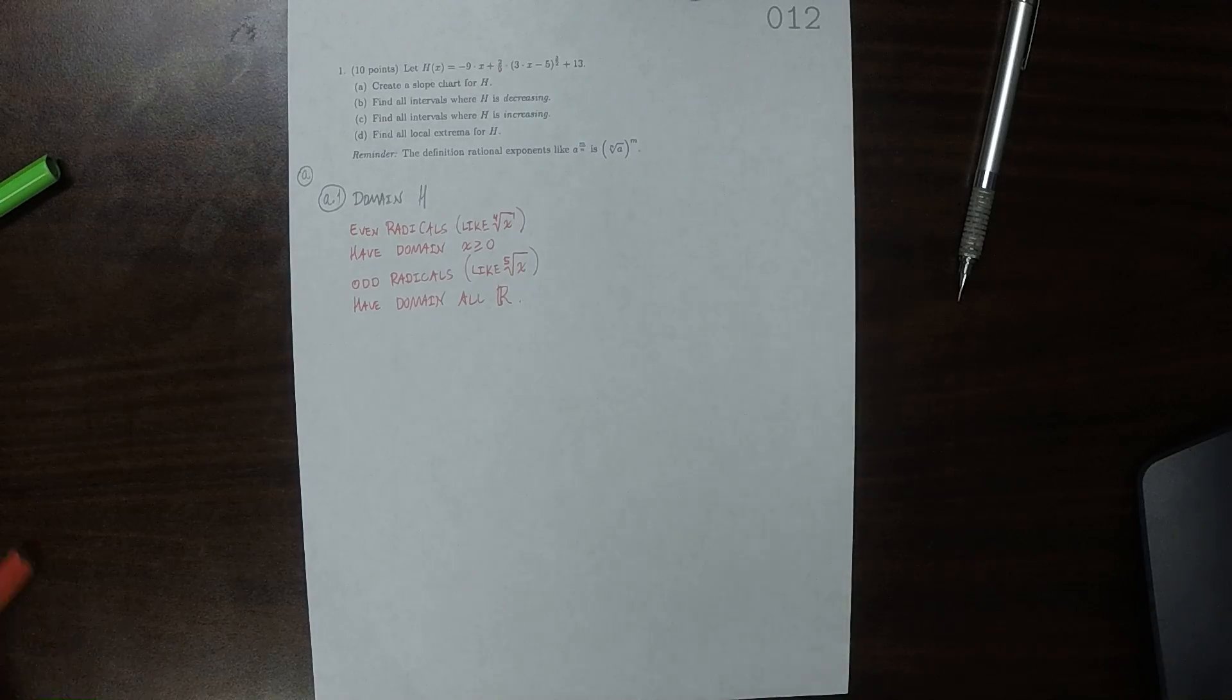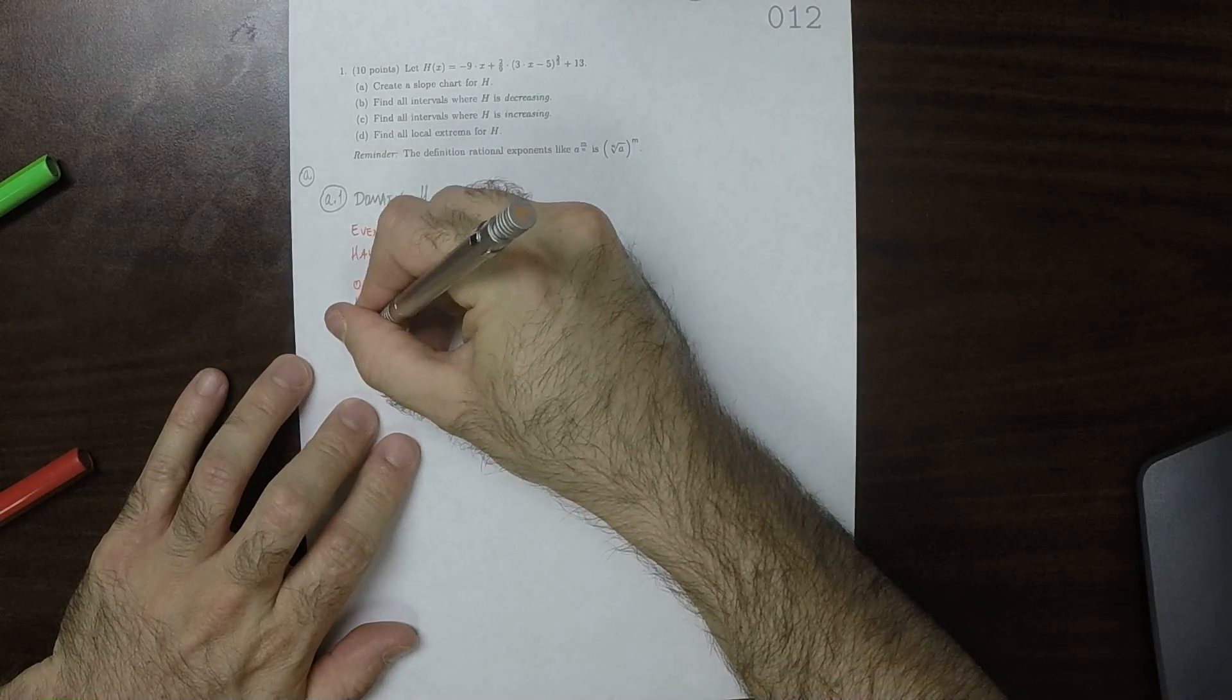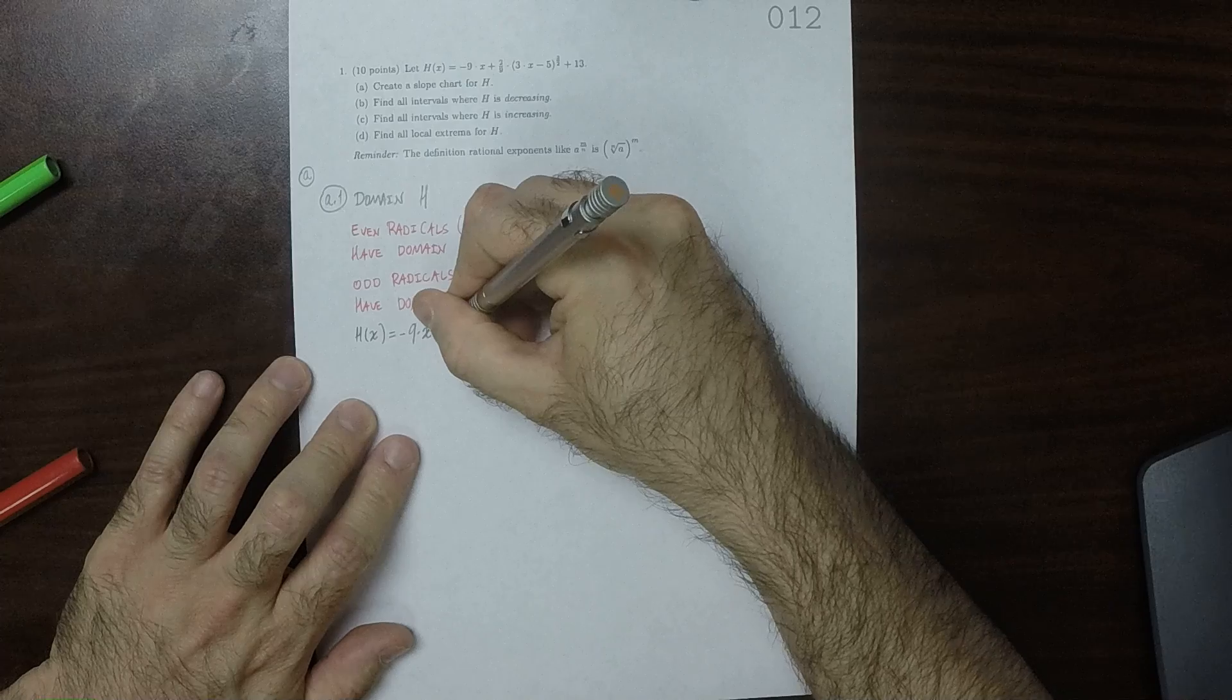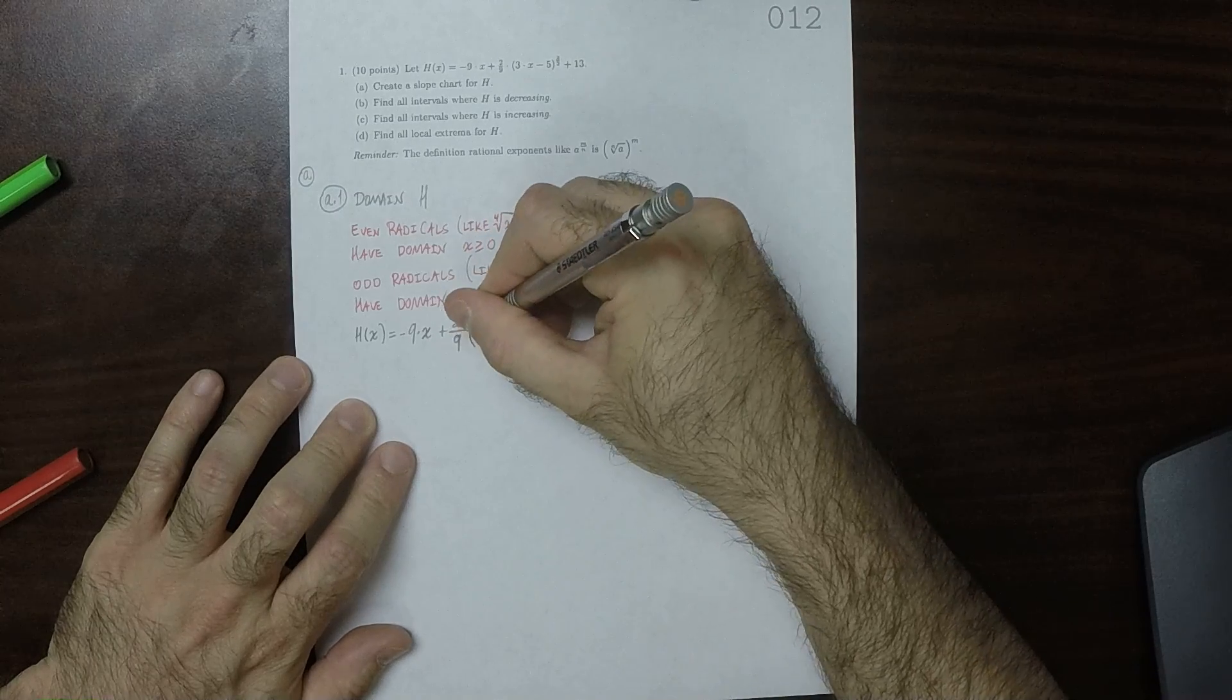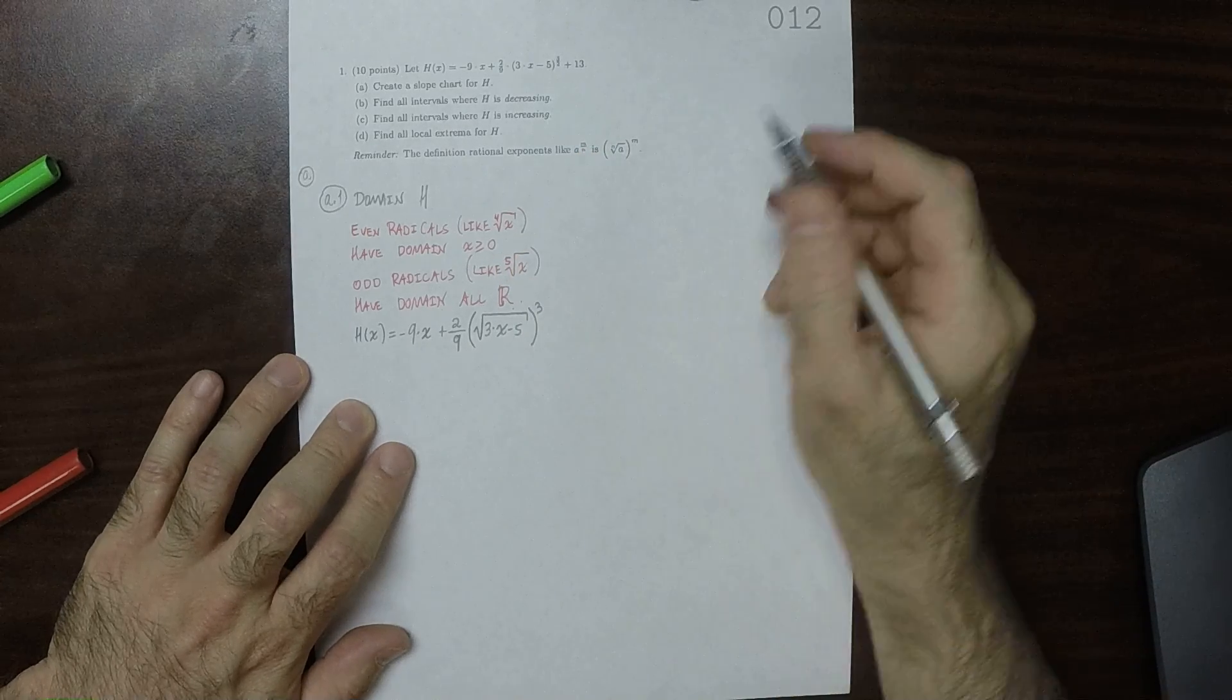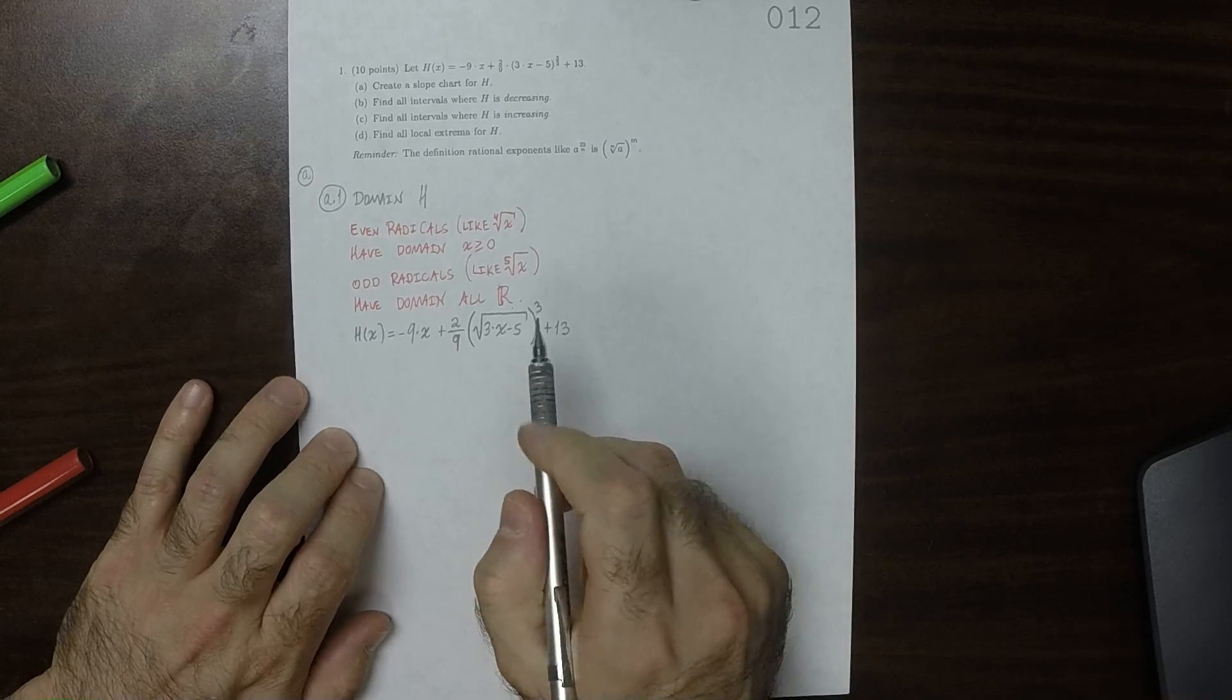Okay, so then the reminder is that this fractional exponent actually means an expression involving radicals. So H of X is equal to negative 9 multiplied by X and then plus 2/9. And now in terms of radicals, this would be square root of 3X minus 5, and then that all cubed, because square root is second radical. And then plus 13, like so. So when it's written this way, you can see that because of this radical, there's going to be a restriction in the domain.